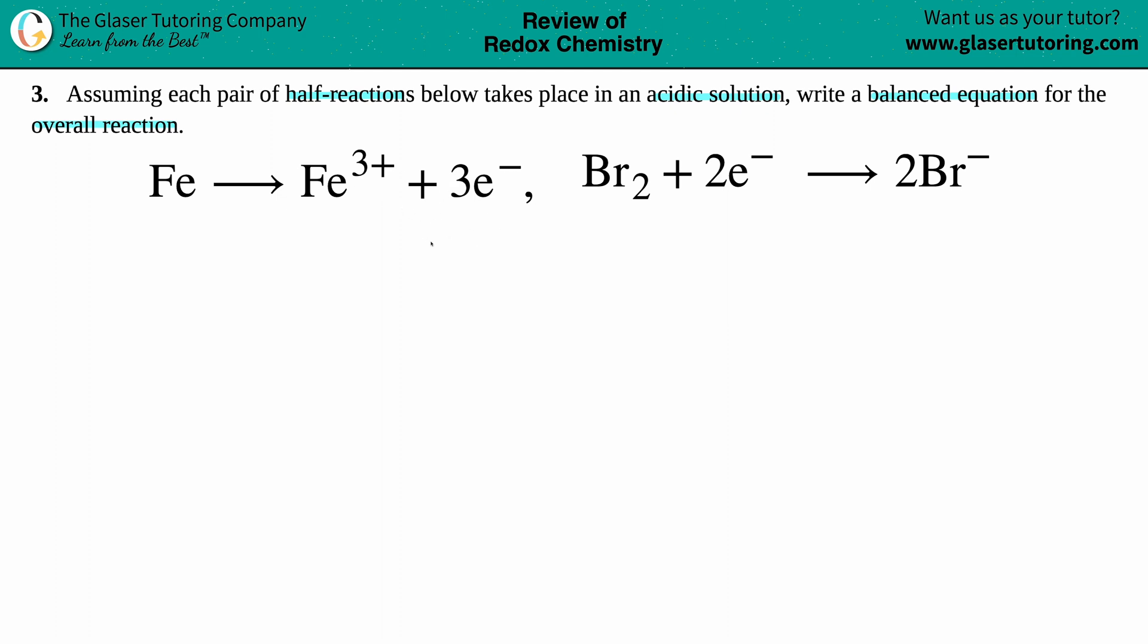So I'll say we have Fe yields Fe³⁺ plus three electrons, and then on the bottom I'll put the other one: Br₂ plus two electrons yield two Br⁻. Let's just center these out and now let's work with them.